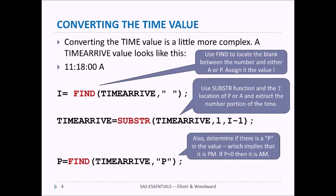We're also going to convert the time value that's in a different column. The time value is also in a character variable in the form of something like '11:18:00 A' or 'P' for PM. The first thing we want to do is locate the blank between the numbers and either the A or the P for AM or PM. We use the FIND function and set I equal to the location of that blank. Then we use the value I and the SUBSTR function to extract the first part of the character value up to I minus 1.